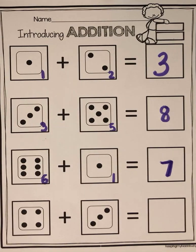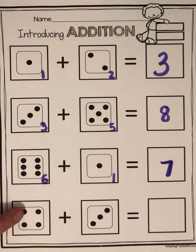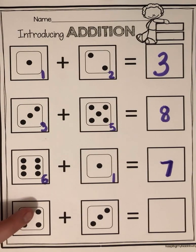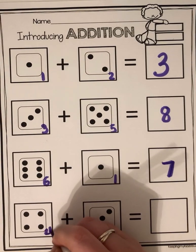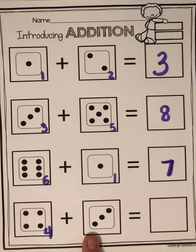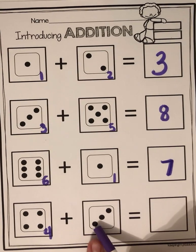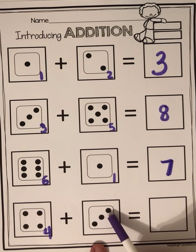And now the last one. Let's count together. One, two, three, four. So I'm going to write four. And let's count how many dots over here. One, two, three.